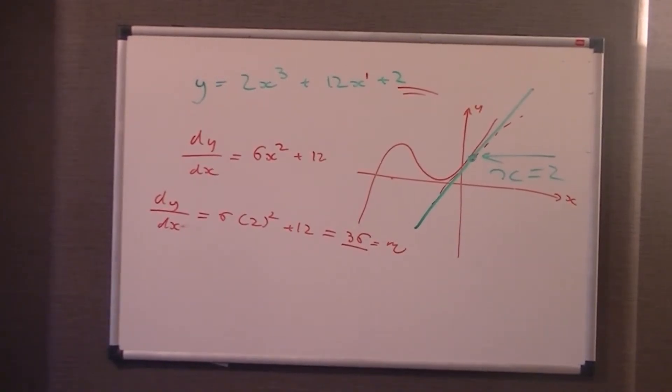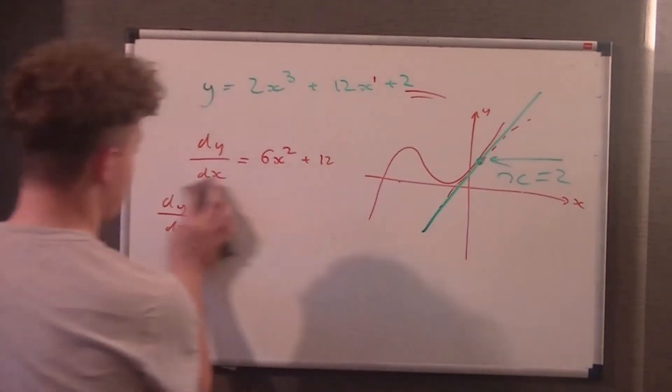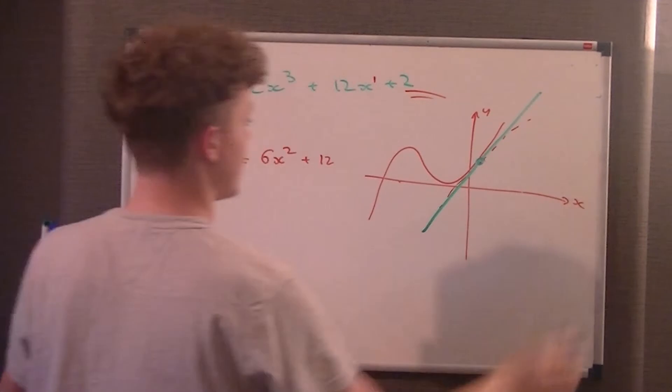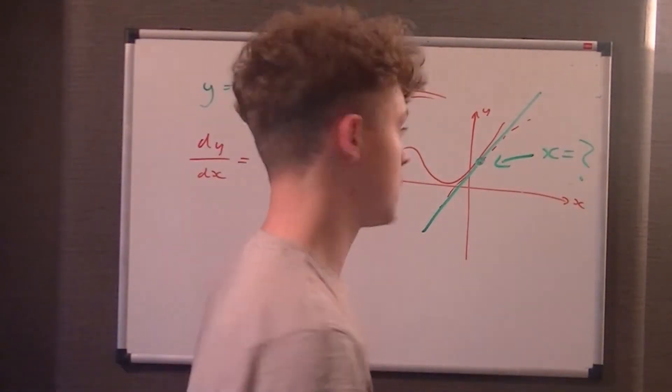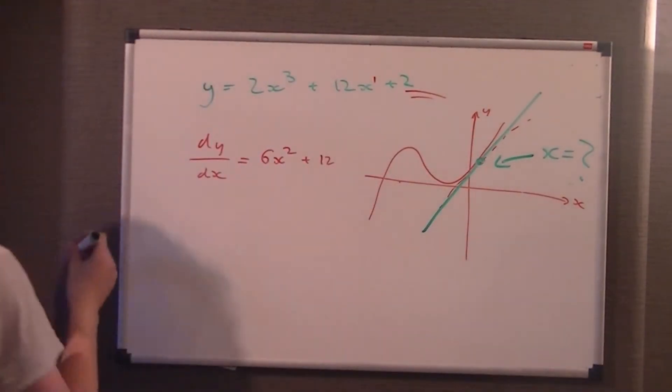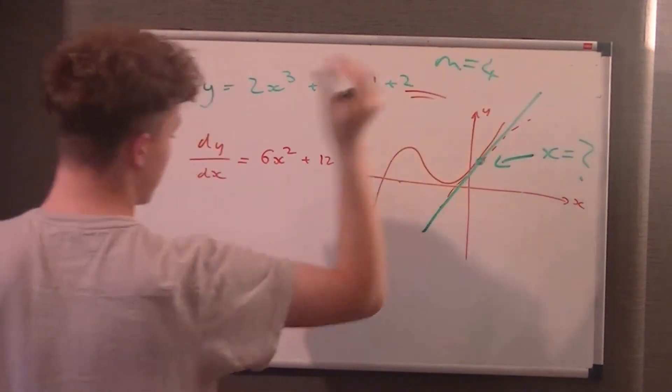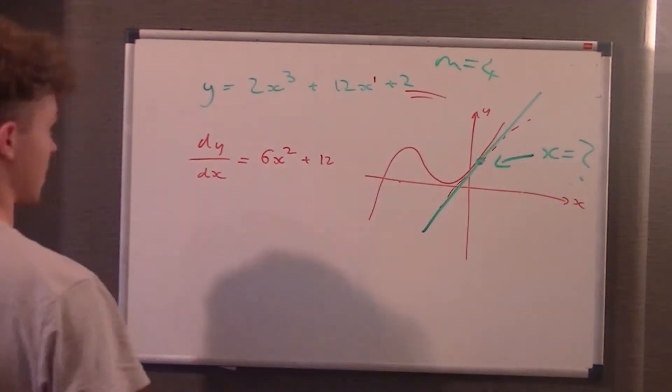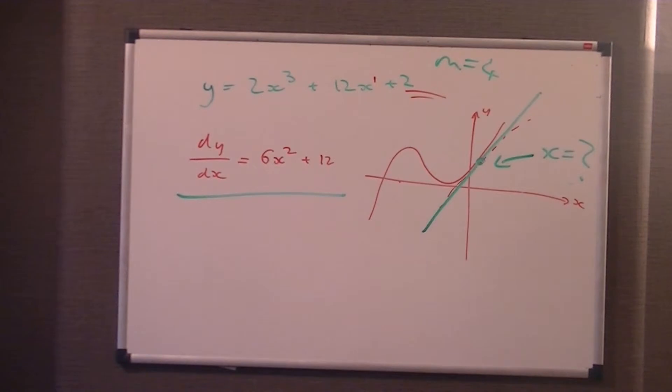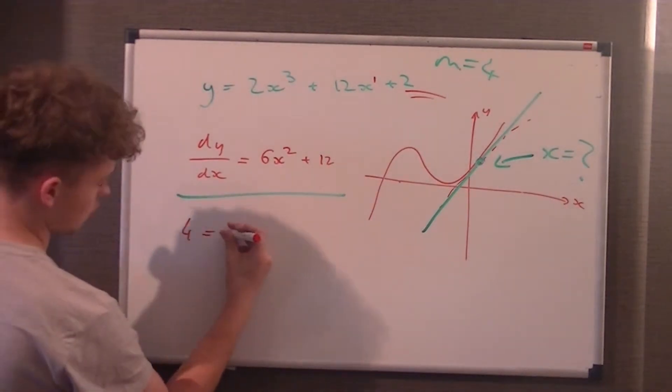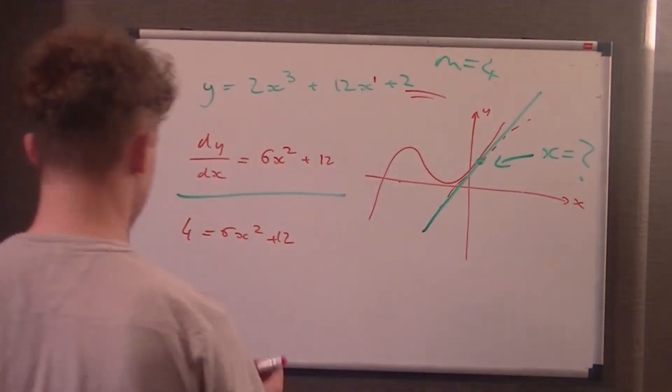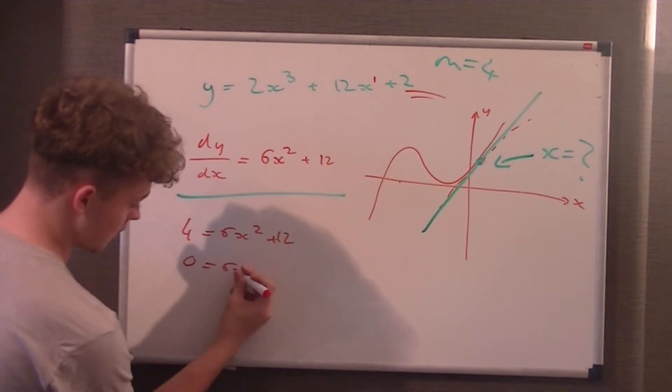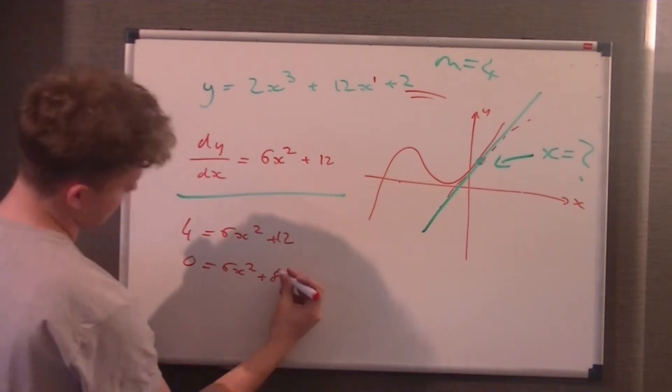Sometimes, to flip it on its head, the example says we're not going to tell you what the x coordinate is. We're going to assume we don't know what this value of x is here, and it says find the coordinates at the point where the gradient is 4. So we know m equals 4. We differentiate the equation, we're going to get the gradient function. But we know m is 4, so we can say 4 equals 6x squared plus 12. We move the 4 over, so we get 0 equals 6x squared plus 8.